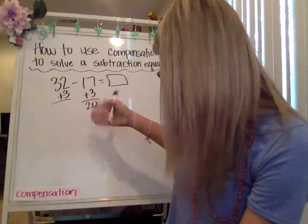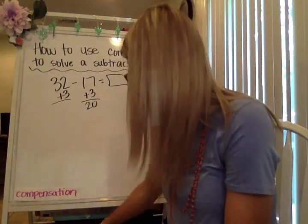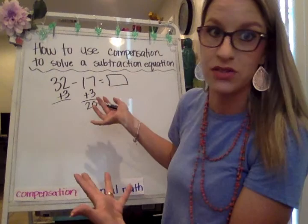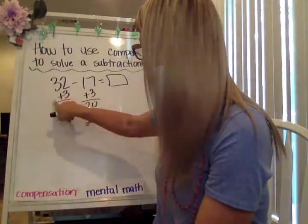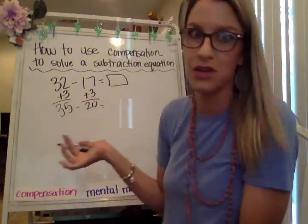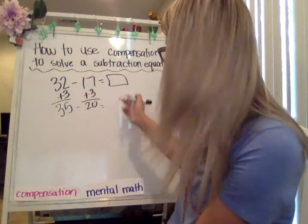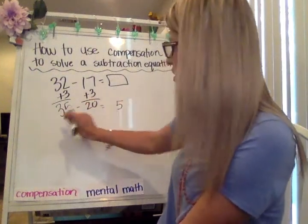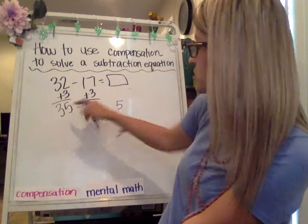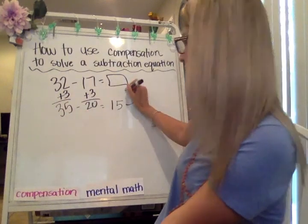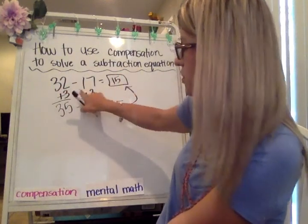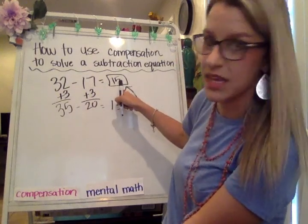We can use mental math for the next phase of compensation. So we've got 35 minus 20, and that's something you can do in your head. You're keeping the ones the same and subtracting three 10s minus two 10s, which will be 15. So the difference between 32 and 17 is 15.